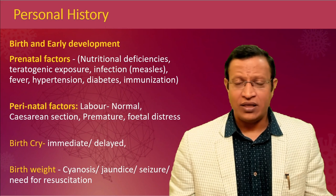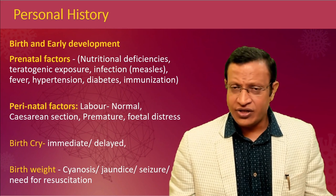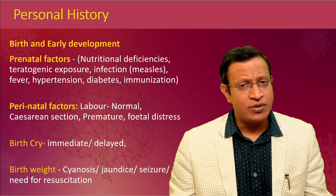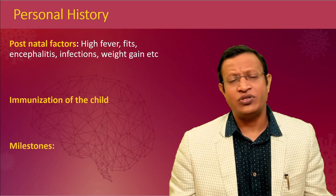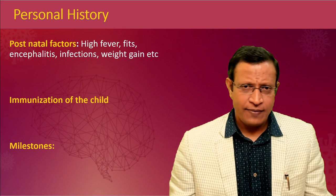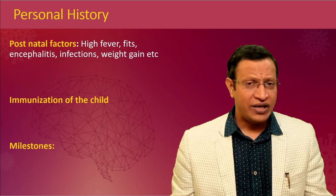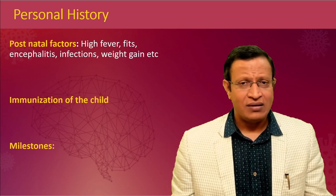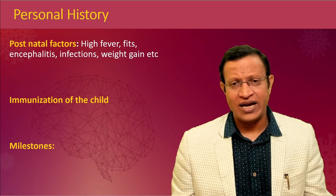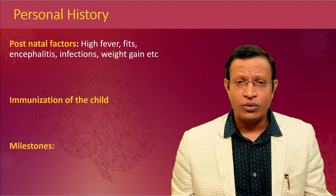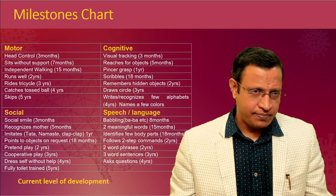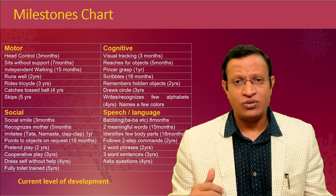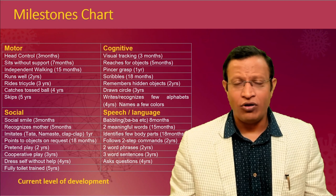Then move to postnatal history — four weeks from birth and later. Whether the child had any complications, infections, or other problems, and whether immunization was done. After these, move into milestones, which are very essential for identifying developmental disorders. There are four important milestone domains: cognitive milestones, social milestones, speech and language, and the current level of development. Having a chart within the proforma makes things easier. When asking about milestones, it is best to compare with an elder child — ask whether the present child had any problem with walking, talking, or toilet training. Note whether milestones are age appropriate, mildly delayed, focally delayed, or globally delayed.